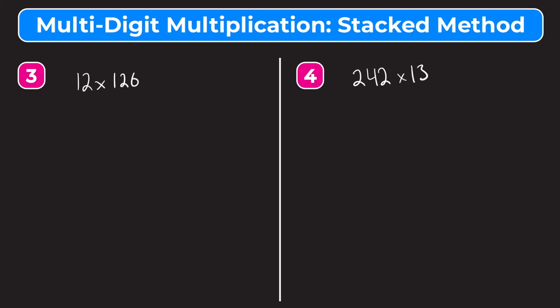In those first two examples, both numbers had the same number of digits, but that's not always going to be the case. Sometimes you'll have a 2-digit number times a 3-digit number, or a 3-digit number times a 1-digit number. Let's try number 3 — we have 12 times 126. We always want to put the larger number on top, so we start with 126. We have 126 times 12. The 6 is over the 2 because they're both in the ones place, and the 2 in 126 is over the 1 in 12 because they're both in the tens place.